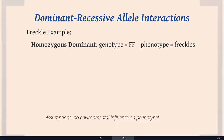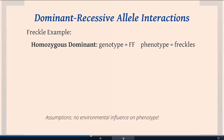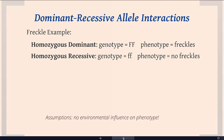Back to freckles: if you have two big F's, your genotype is homozygous dominant. We use capital letters to represent the dominant version of the allele and lowercase to represent the recessive. So if this is your genotype, your phenotype is freckles. If you are homozygous recessive — meaning your genotype is made of two recessive alleles — then your phenotype would be no freckles.